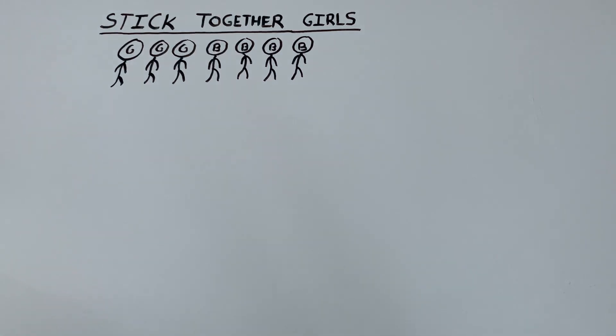This time, they want to sit in a row of seven chairs such that all three girls end up being next to each other, so there is no boy sitting in between the girls.